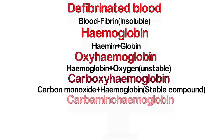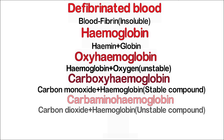Carbaminohemoglobin is composed of carbon dioxide and hemoglobin. It is an unstable compound, meaning hemoglobin can be separated from carbon dioxide.